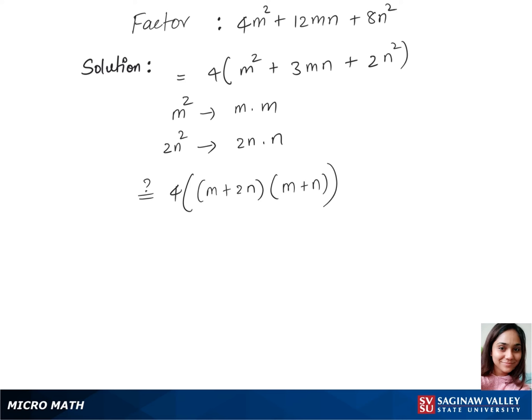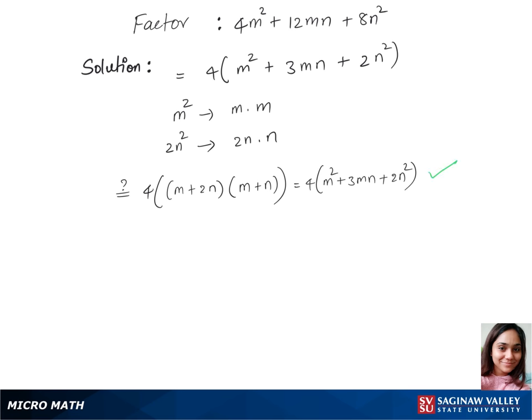And when we multiply this, we get 4 times m square plus 3mn plus 2n square. And so this matches up with our top trinomial.